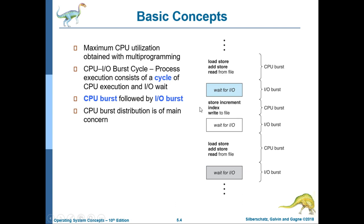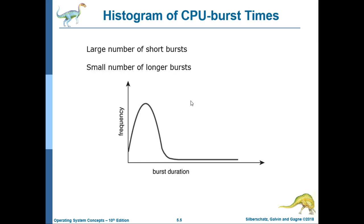Then again, another execution of commands — store increment, index, write the file — is another CPU burst, always followed by wait for IO, which is again an IO burst. So, CPU burst is always followed by an IO burst. For the histogram of CPU burst time, there are a large number of short bursts and a small number of longer bursts. The curve is generally characterized as exponential or hyper-exponential.